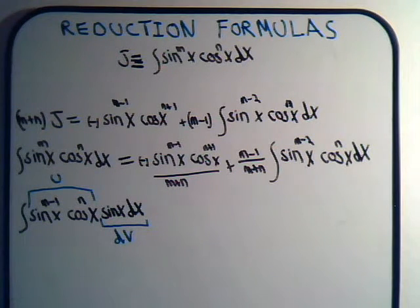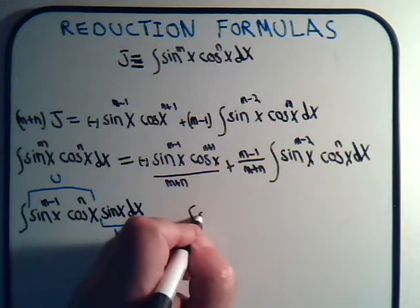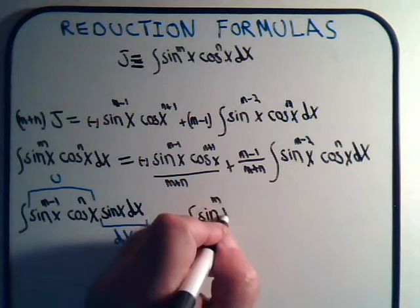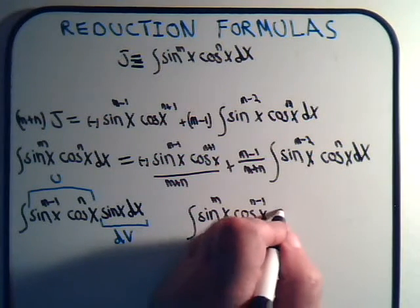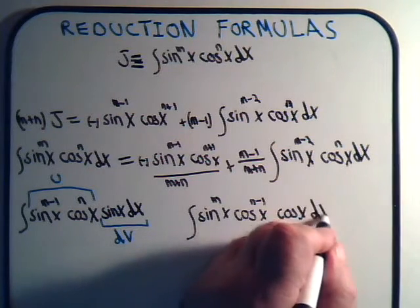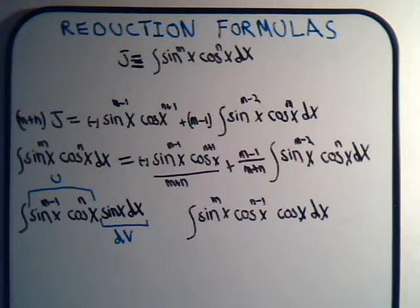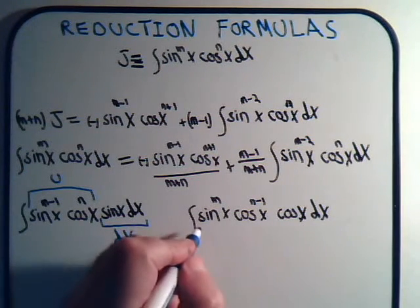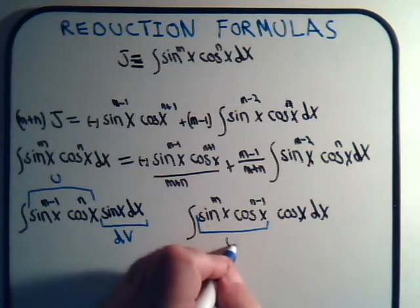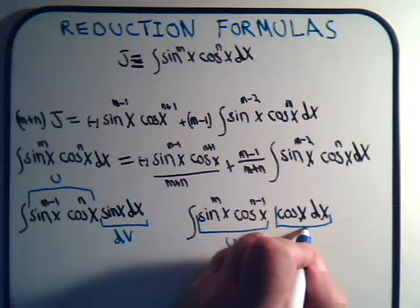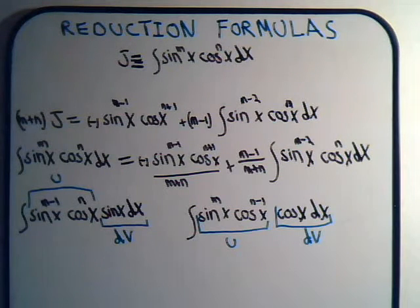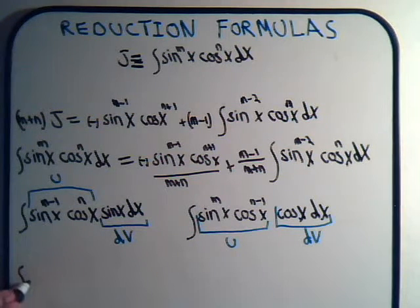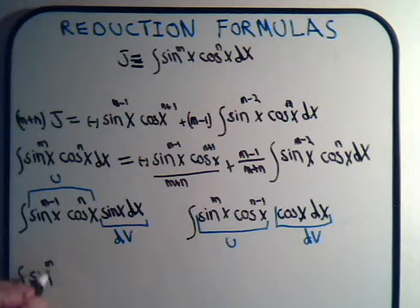We could have just as easily rewrote it like this. The second half sin^m(x) cos^(n-1)(x) times the cosine of x dx. And then this would have been designated as u, and this would be dv. And if you work with this integral and go through the same process as we did with this integral, you end up with this kind of a reduction formula.